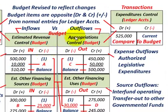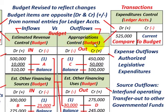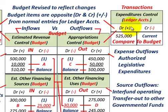Moving over to our expense side — our outflows — those would be our expenses. For appropriations control in the budget, you're going to have a debit minus versus the actual transactions, which are the expenditures control in your ledger accounts where you have a debit plus. So for expenditures, your debit is plus and credit is minus. For the budget, it's just the opposite — debit minus, credit plus. Just to make that point so there's no confusion.